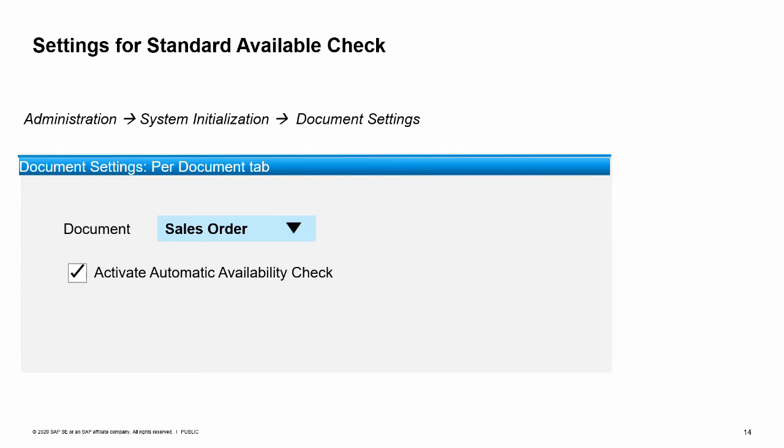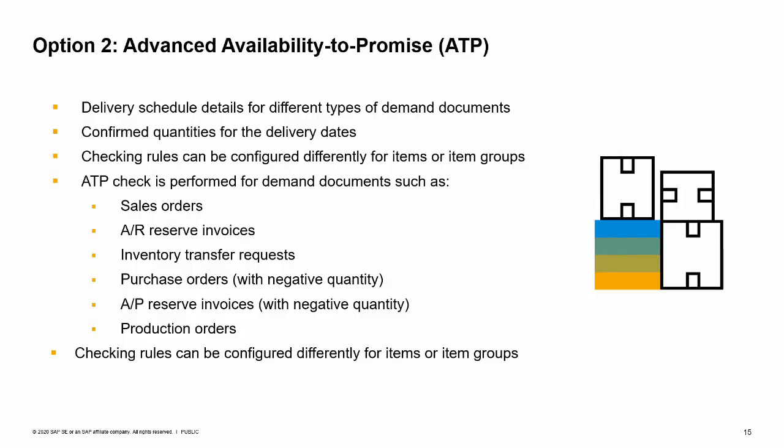To activate this option, go to the per document tab of the document settings window and choose sales order. Check the activate automatic availability checkbox. If you are running the SAP HANA database for your transactional database, you may wish to use the second option for additional functionality.